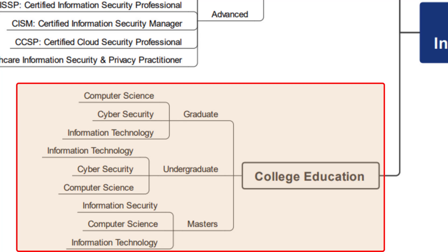Next we're looking at the graduate program. Again, I have this listed out as computer science, cyber security, and information technology — very much in line with the undergraduate programs, and you could combine the two and go for the full course. The information technology and computer science tracks include some information security but won't bring you to the same level as going straight for a cyber security or information security track. Last but not least, the master's — and the same areas apply here. Once you want to get into management in information security, that's where the master's can make a big difference.